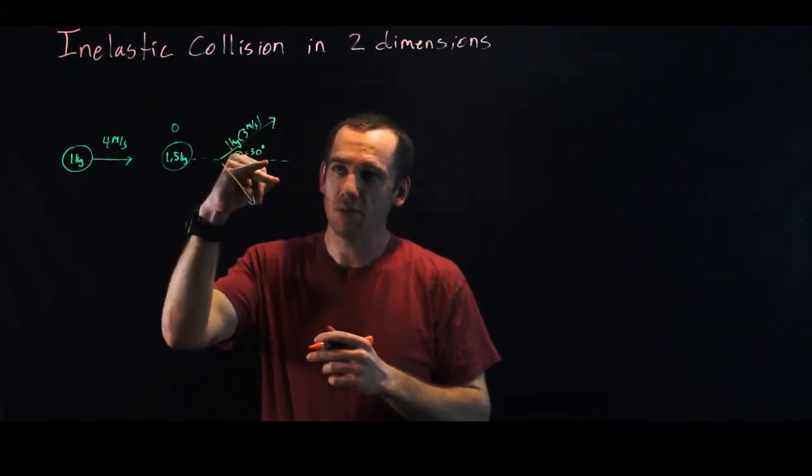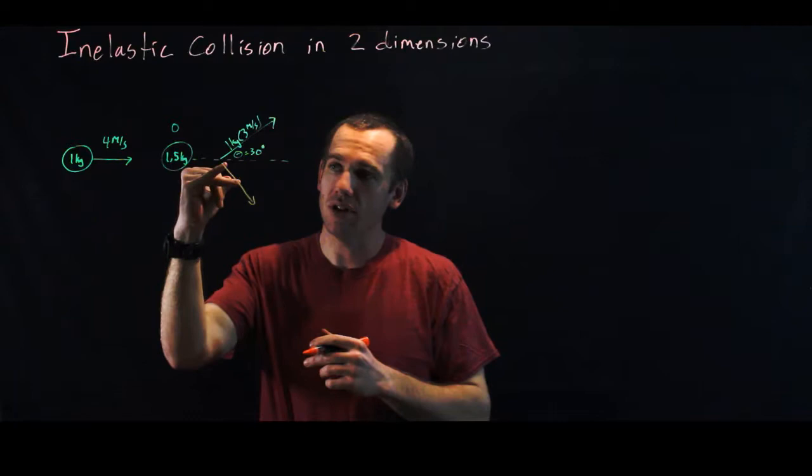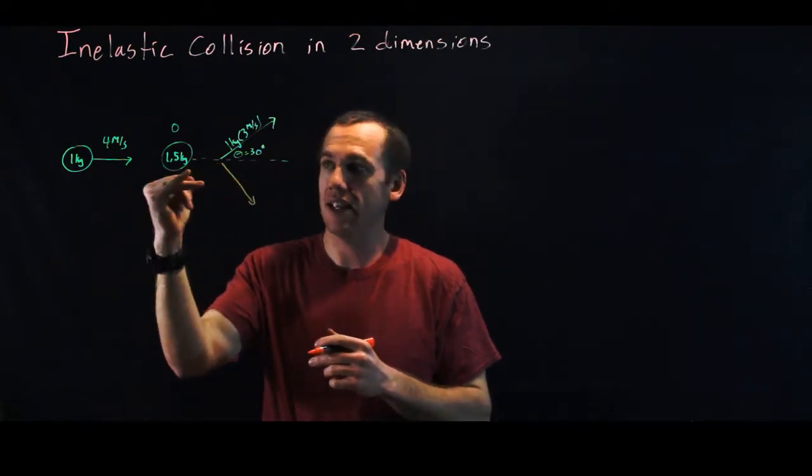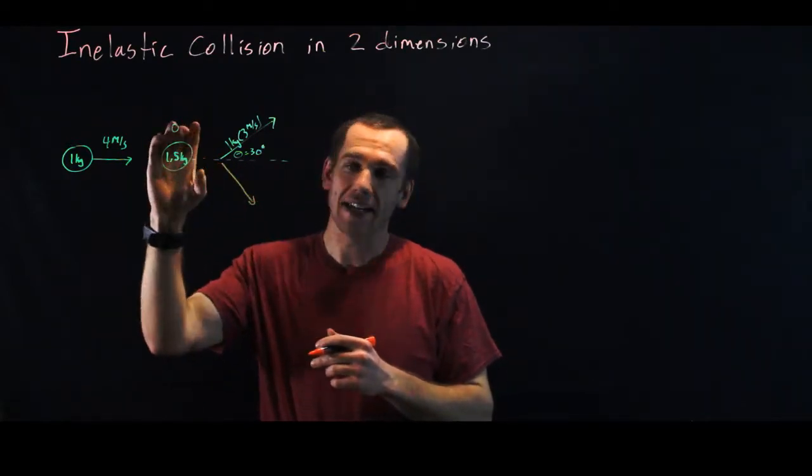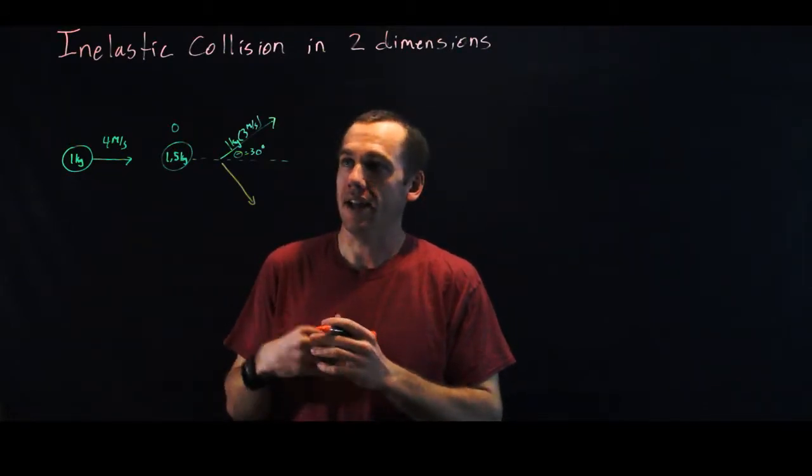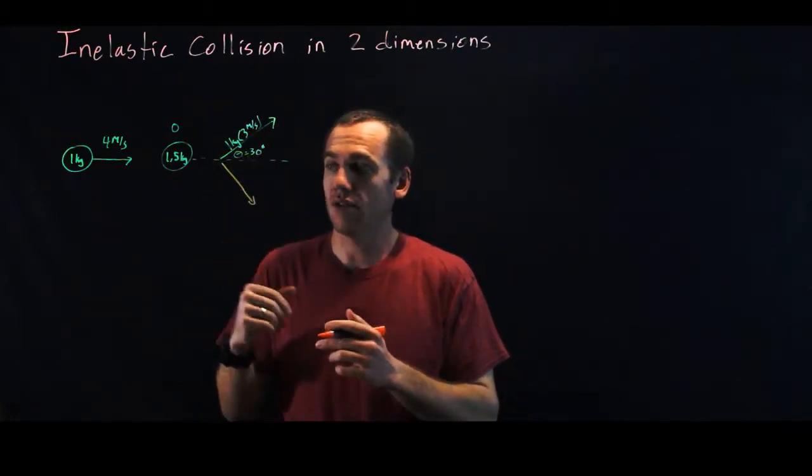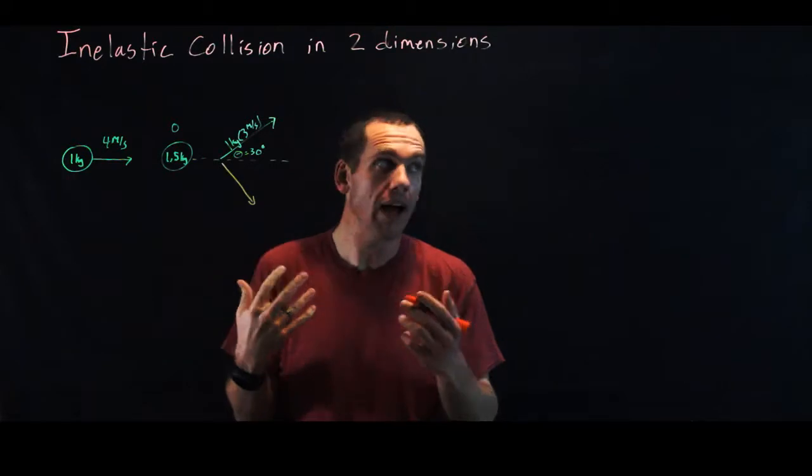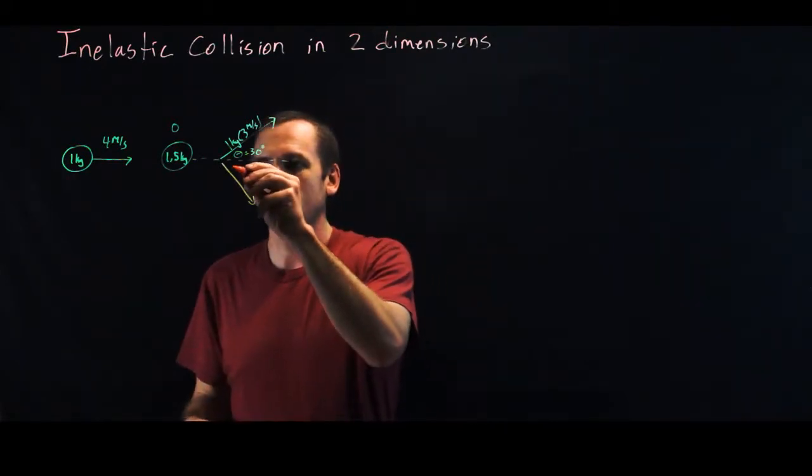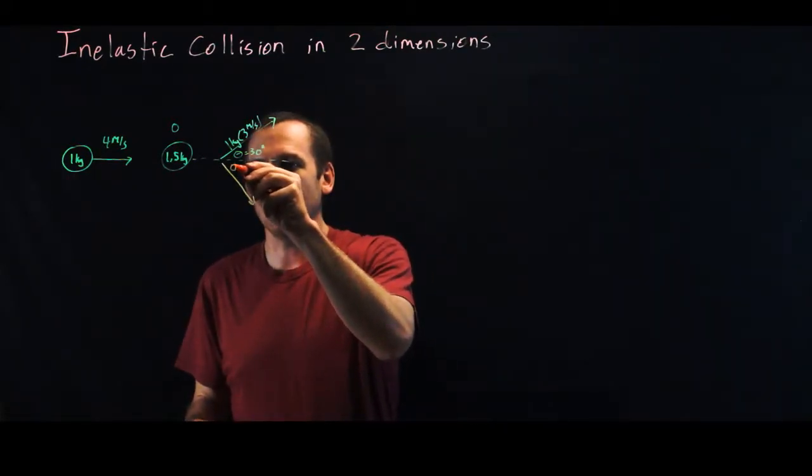So it does not have as much momentum in x as it used to have. So just to make our momentum in x stay the same, this has to have an x component. And it's got to have a negative y component because it's got to add back up to zero, right? So the law of conservation of momentum we can apply in both directions. And so this angle down here we don't know.